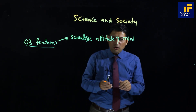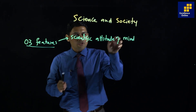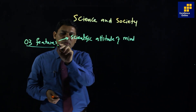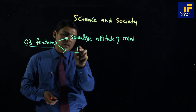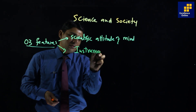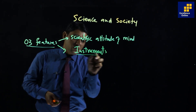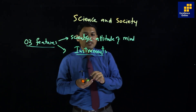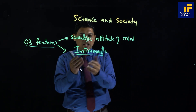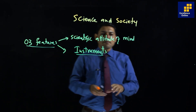So the first element contributing to rapid development of science from the 17th century onwards is the scientific character of mind. Number two: the invention of instruments from the 17th century onwards — wonderful, unbelievable instruments. The invention of instruments also led to the rapid development of science.